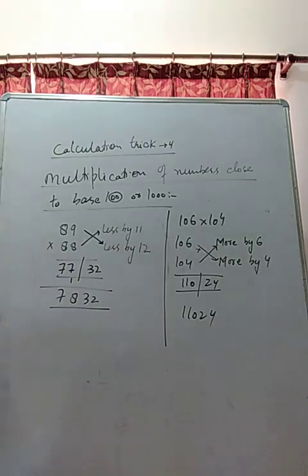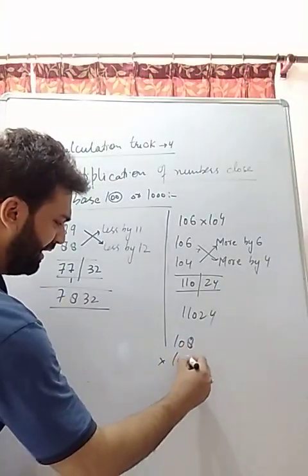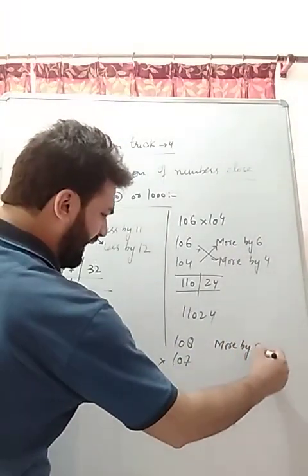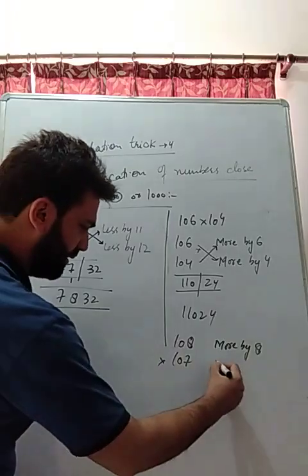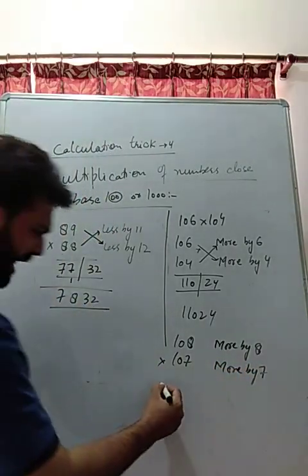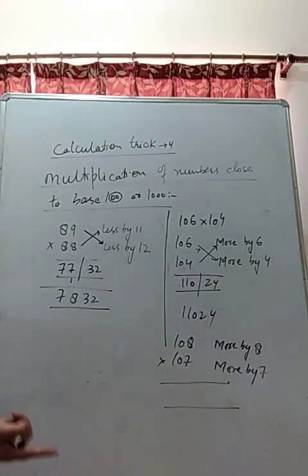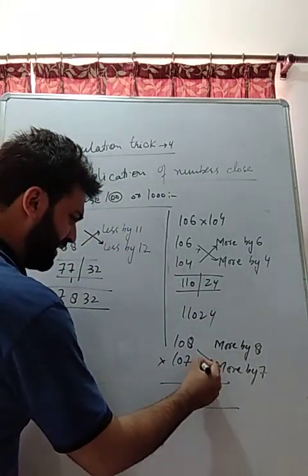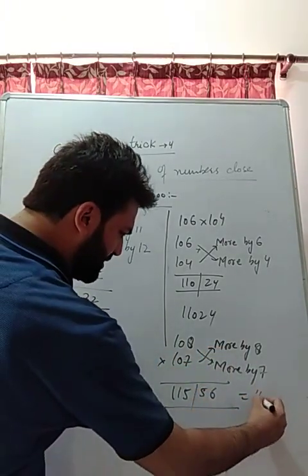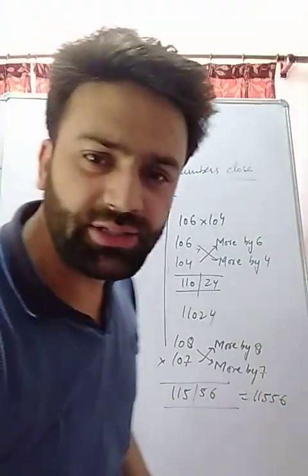Isn't it amazing? It's really amazing. 108 multiplied with 107. It's more by 8 than 100, more by 7. So what is the answer? 108 plus 7 is 115, 107 plus 8 is 115. Cross add it, it's 115. 8 into 7 is 56. So the answer is 11556.